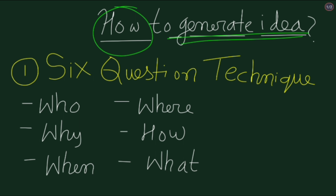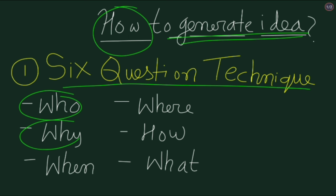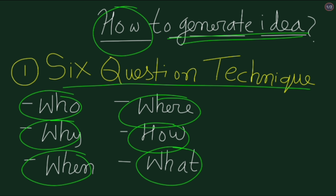The first technique for generating ideas is the six question technique. In this technique, we will look at six questions that help us generate ideas for writing an essay. By answering these six questions, we will get an outline or the main points to write an essay. The six questions are: who, why, when, where, how, and what.